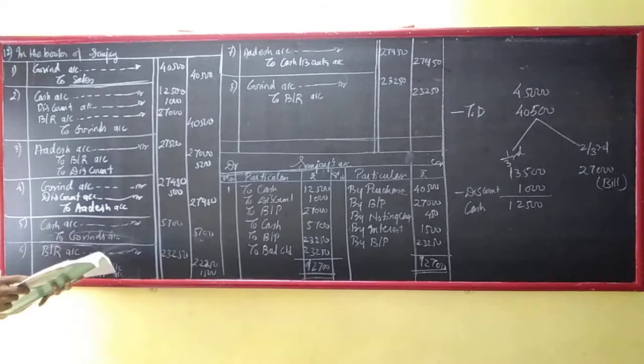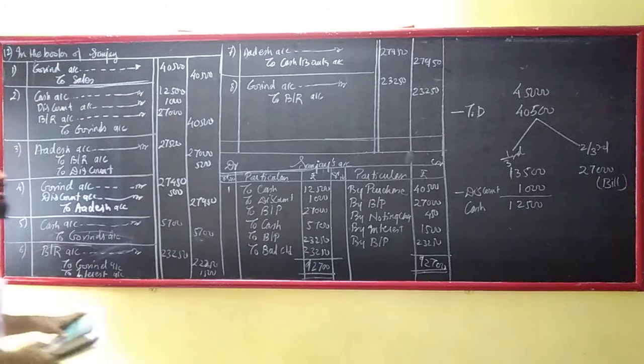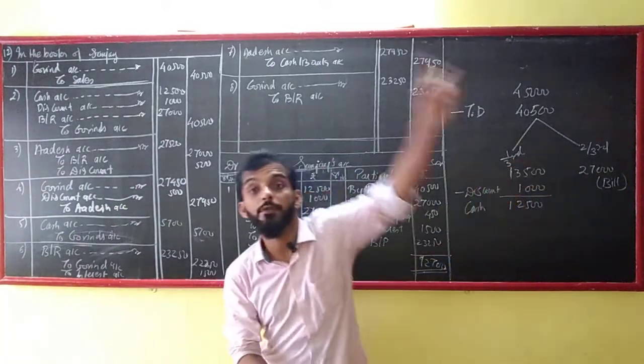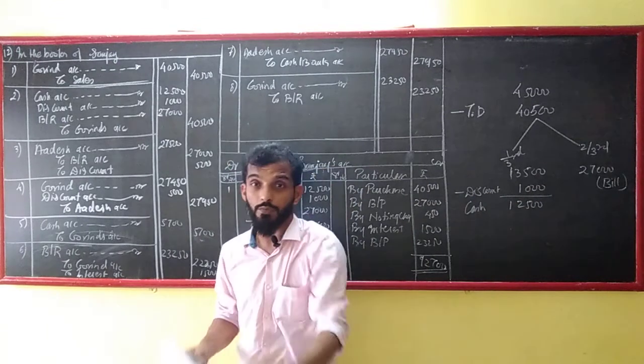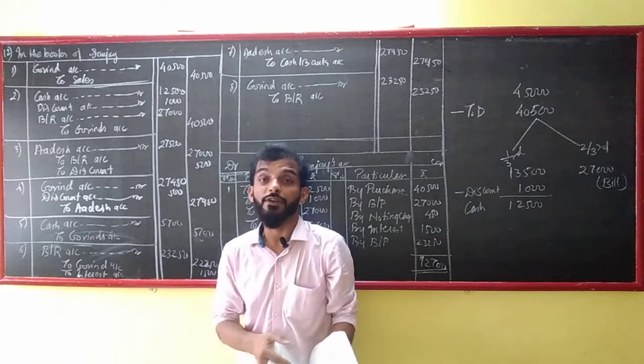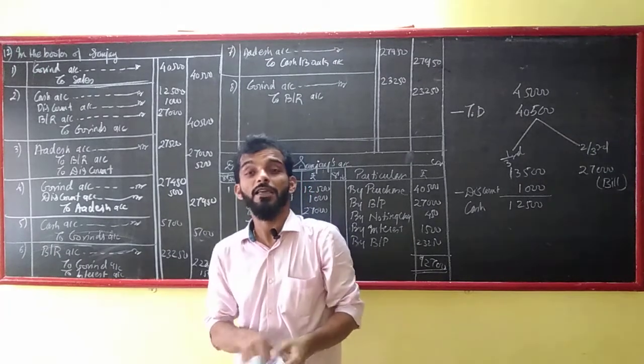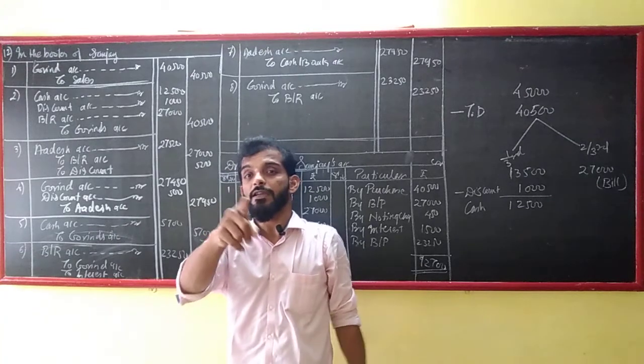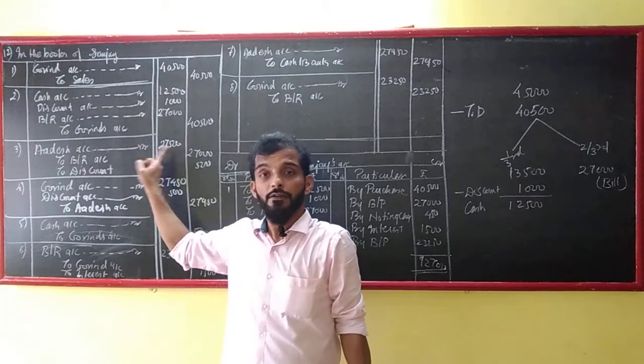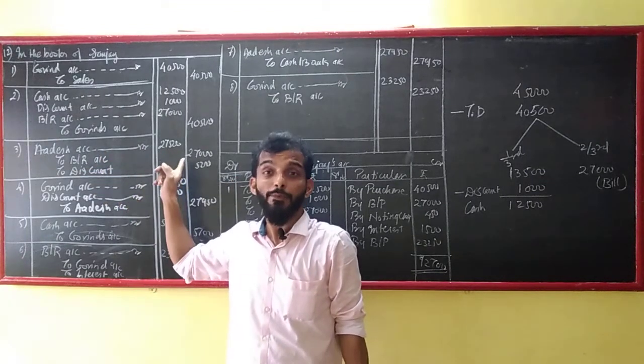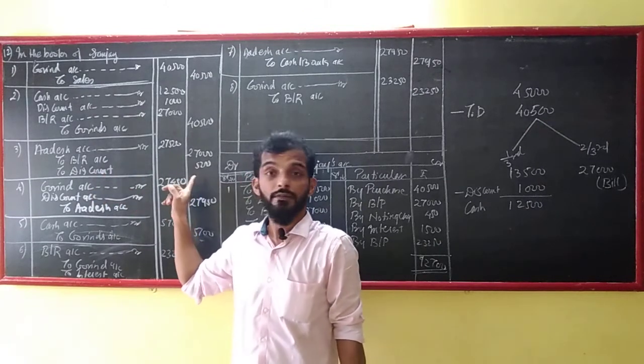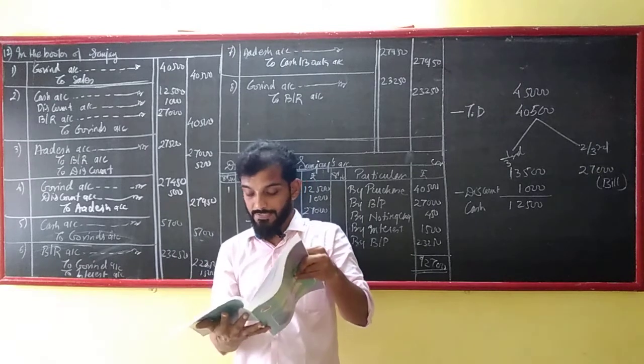Bills receivable account debit to Govind credit. Now on the same date, Sanjay endorsed the bill to Adesh in full settlement of his account of 27,950. So how much bill can be given? 27,000. The bill is 27,000 but Adesh account is 27,950. So we have to give discount to Adesh. Adesh account debit 27,950, to bills receivable 27,000, to discount received 950.